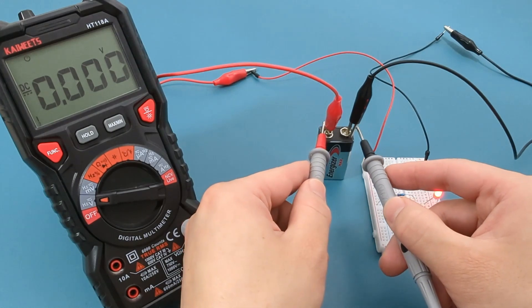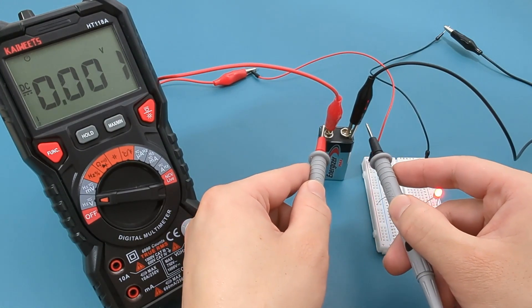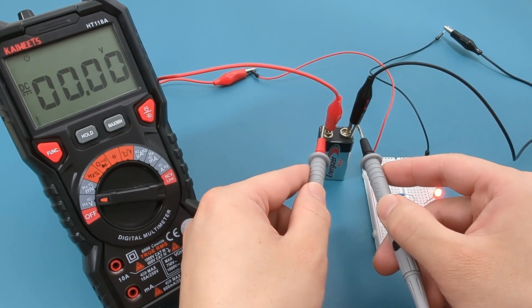Let's check the voltage of the battery. As we expected, the reading shows around 9 volts.